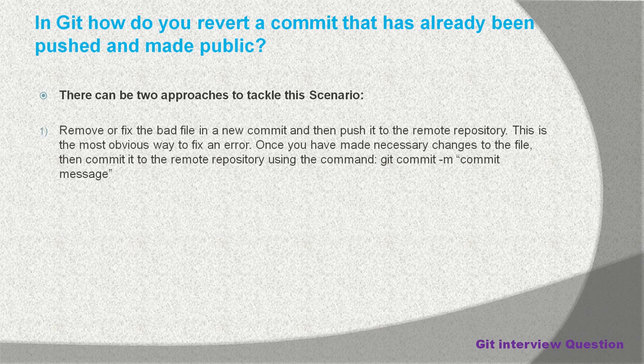The first approach is to remove or fix the bad file in a new commit and then push it to the remote repository. This is the most obvious way to fix an error. Once you have made the necessary changes to the file, commit it to the remote repository using the git commit command. You remove the bad changes locally and push again.